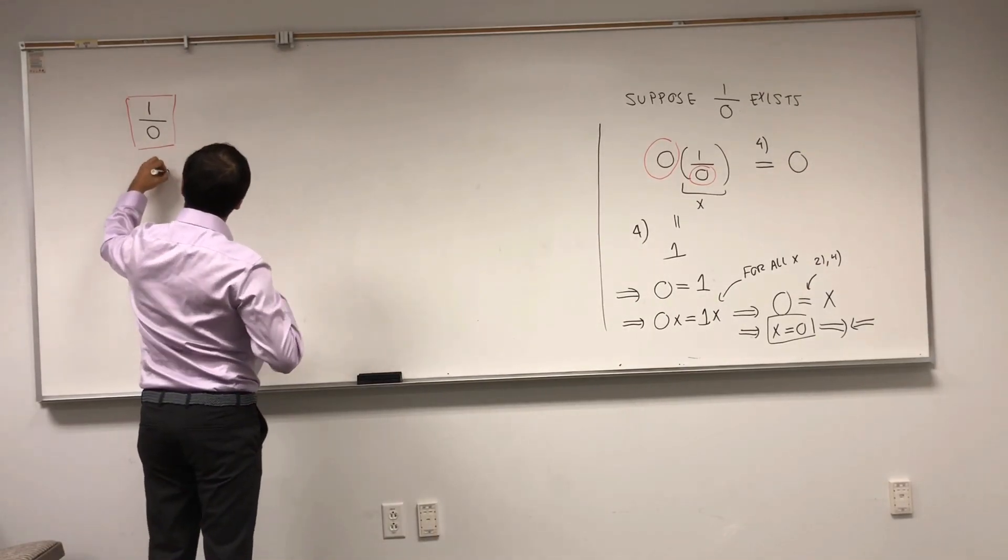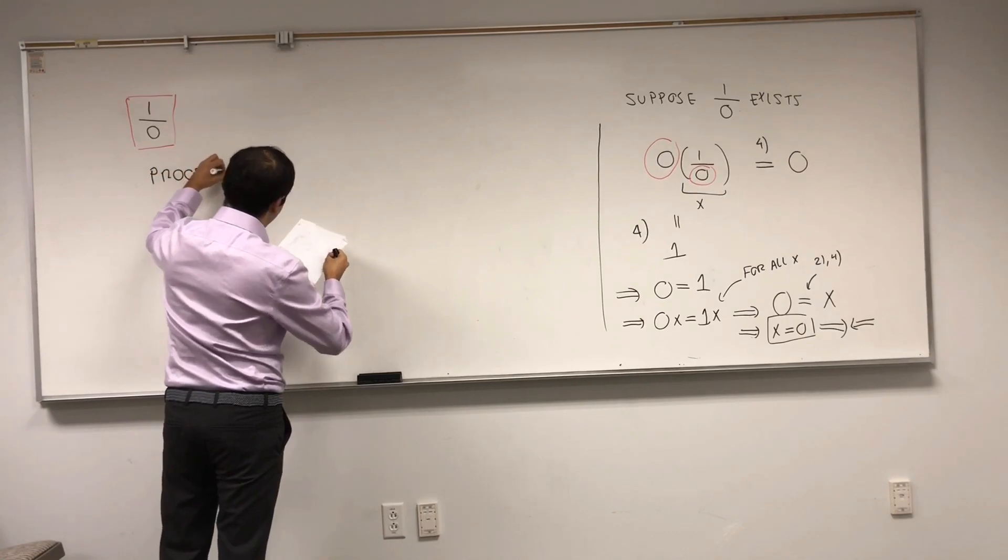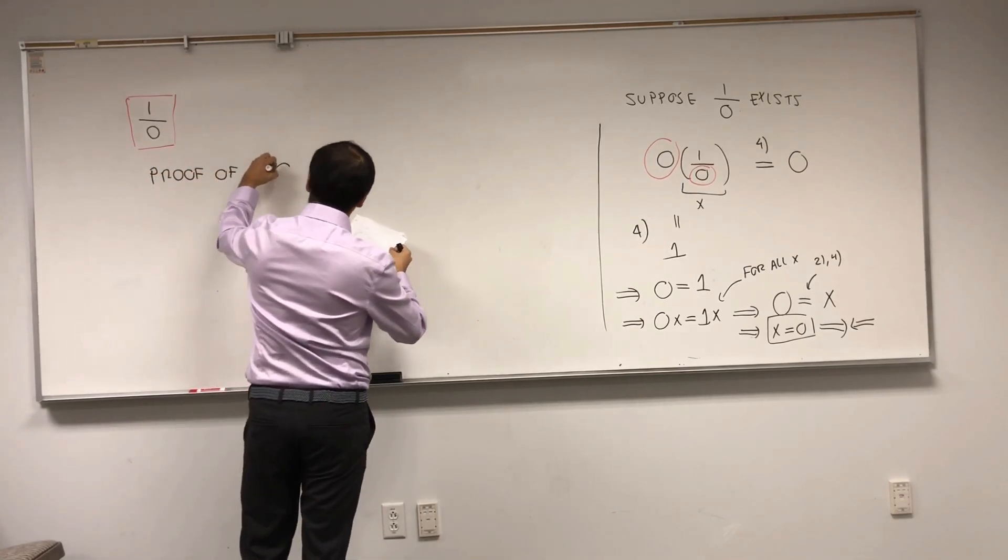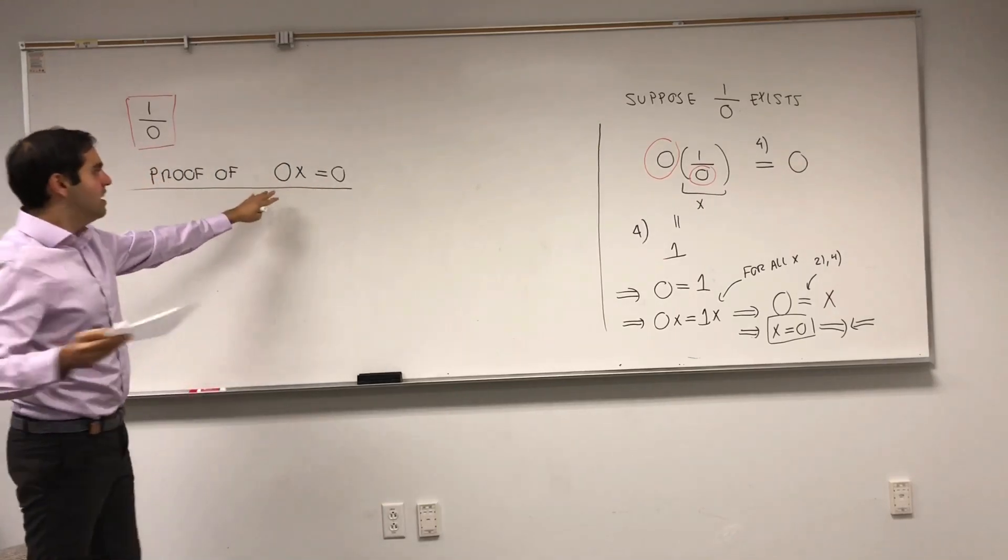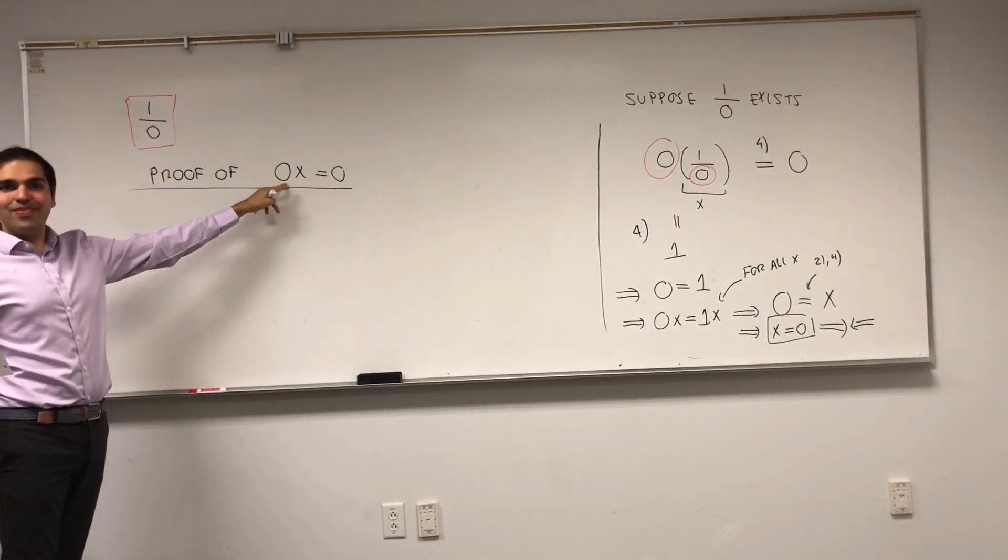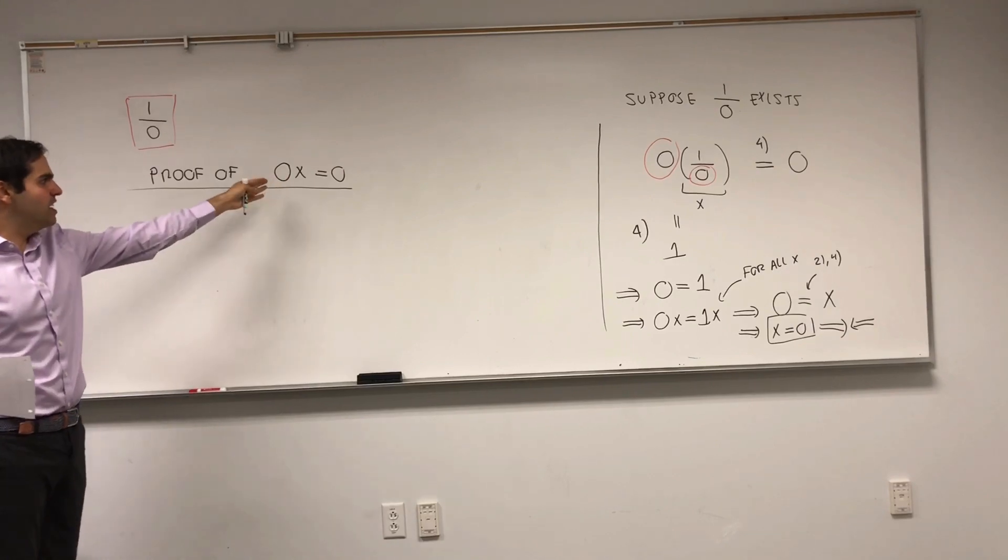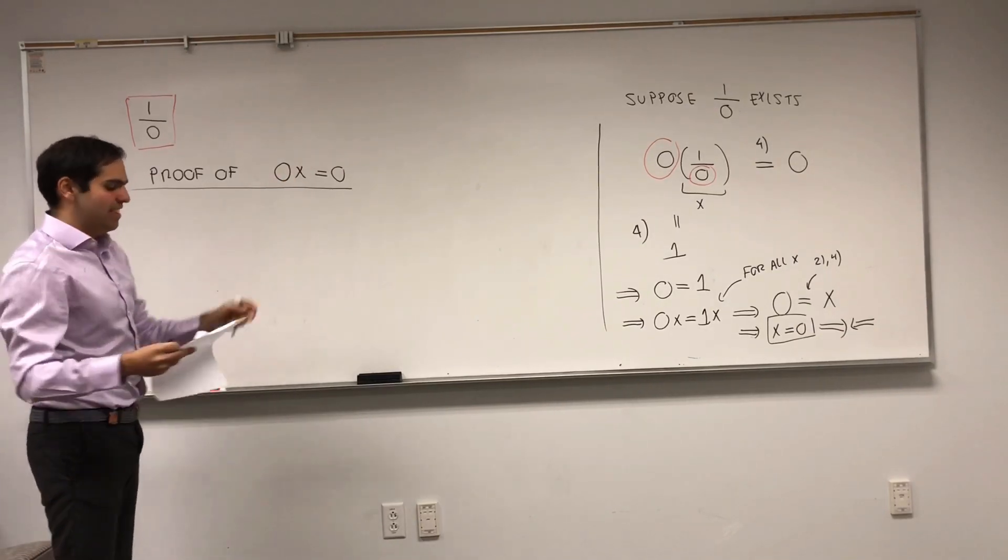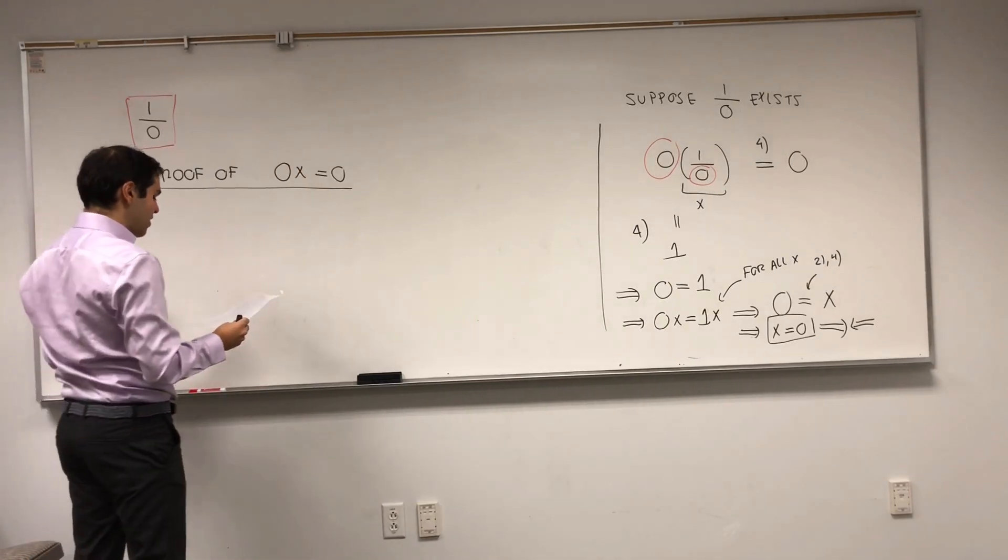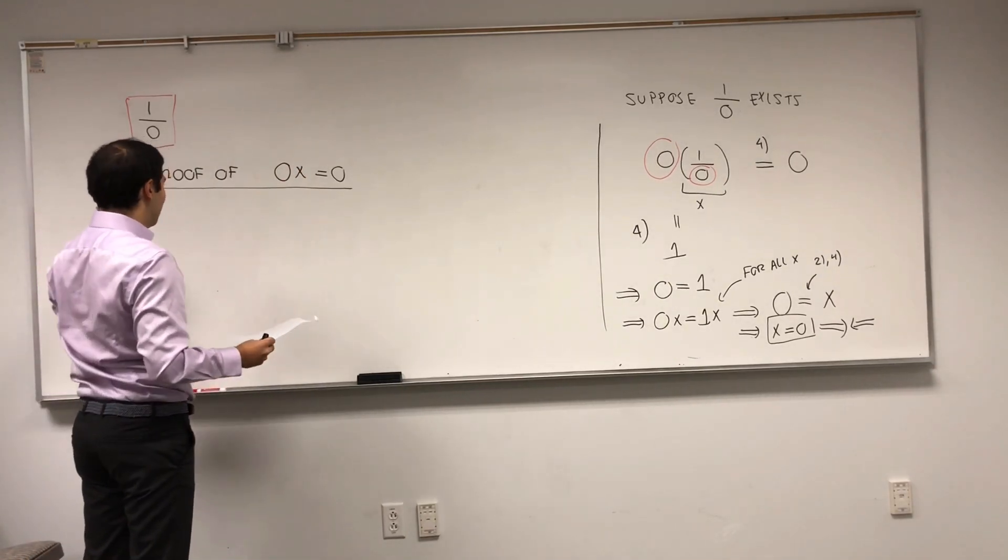So, now, let me prove 0x equals 0. Again, it's not obvious, because 0 is the additive identity, but here I'm saying that multiplying by this additive identity gives you 0. So, here's a cool thing. Notice, 0 times x, that's equal to the following.